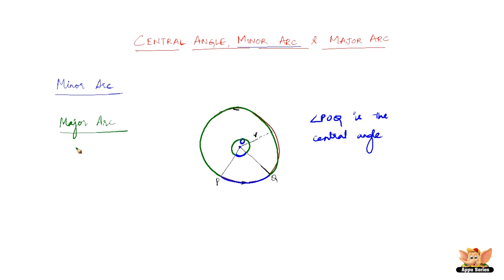So this video explains what is a central angle, what is a minor arc, and what is a major arc, which are very simple but very important points as far as the circle is concerned.